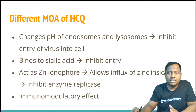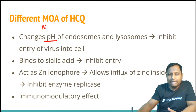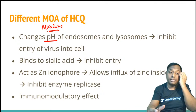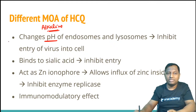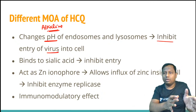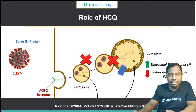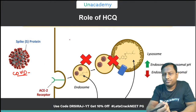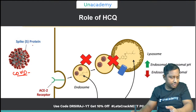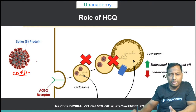This is the most important slide for HCQ. Earlier it was thought that HCQ acts by changing the pH to alkaline. The medium required for the virus to replicate is acidic pH. The first mechanism of HCQ is that it changes the pH of the endosome and lysosome and thereby inhibits virus entry. The COVID virus affects the human cell using the ACE2 receptor, by forming an endosome, or via the sialic acid receptor.